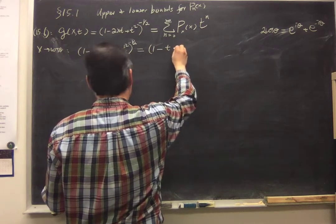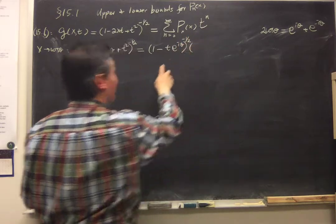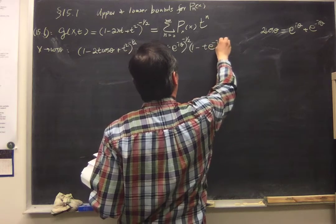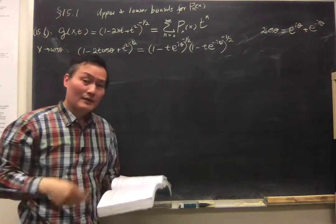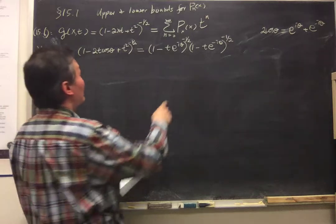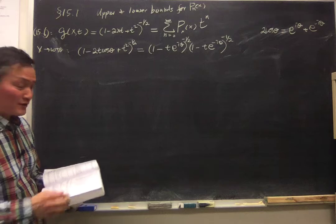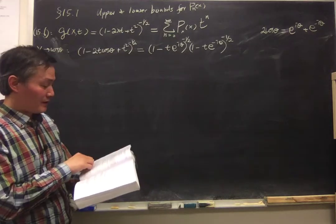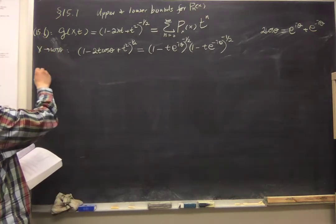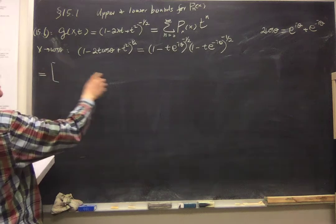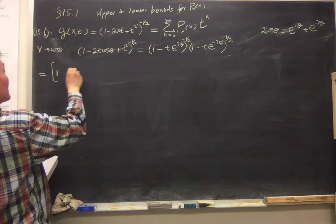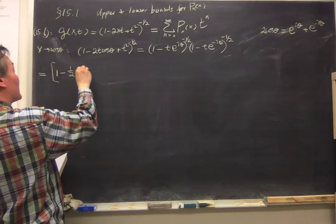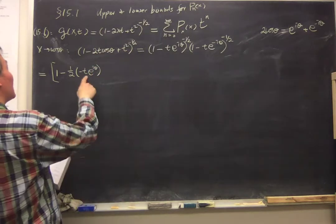We have minus one-half times the complex conjugate of this one. And for real T, 1 minus T e to the minus i theta is to the minus one-half. Now, T is less than 1 — we usually consider T less than 1. So we can take an expansion of these two factors using the binomial expansion. The first term is minus one-half, and the factor gives minus T e to the i theta, which is the first order term.